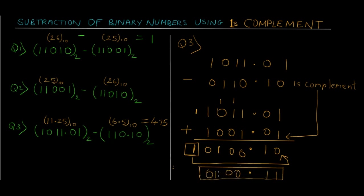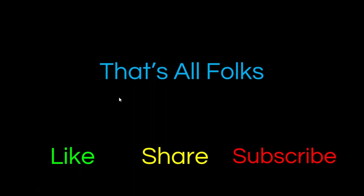Adding the carry gives us the final answer of 0100.75 — that is 0100.11 in binary, which is 4.75 in decimal. If you don't know how to convert, check out previous tutorials in this playlist. That's it for ones complement and binary subtraction. If you liked this video, give it a thumbs up, share it with your friends, and don't forget to subscribe. Peace.